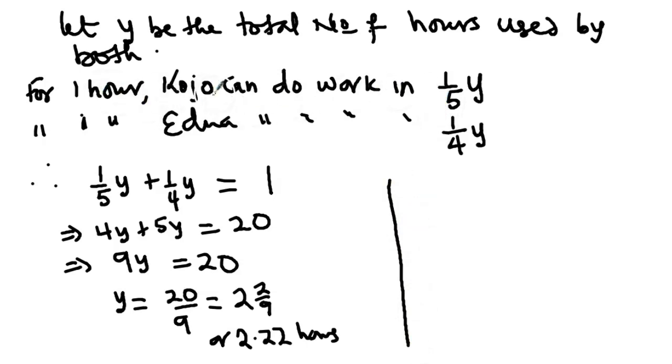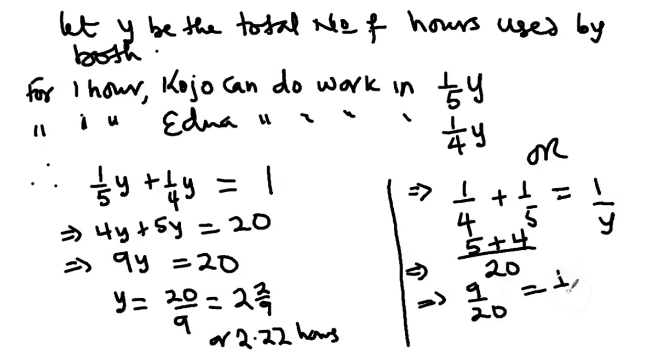Now there is another way. If Kojo can do the work in 1/5 of the total hours, then Edna can also do it 1/4. Then it follows that 1/5 + 1/4 = 1/Y. The LCM on the right-hand side is 20, so you have 9/20 = 1/Y. So Y = 20/9, which would be the same as two whole number 2/9. So it will be the same thing. Either you do it this way or that, you still get the same answer.